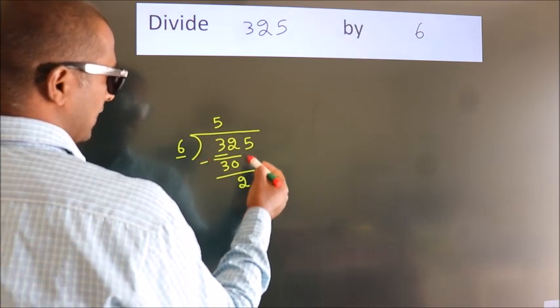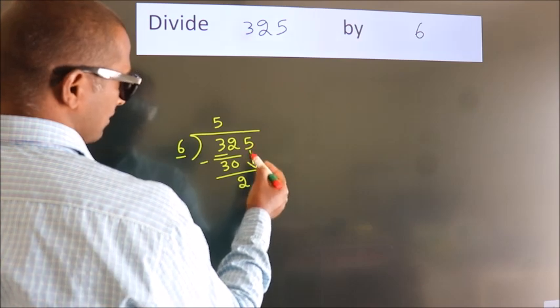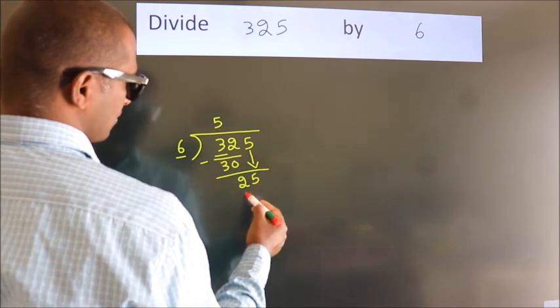After this, bring down the beside number. So, 5 down. So, 25.